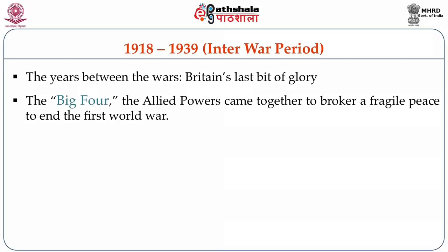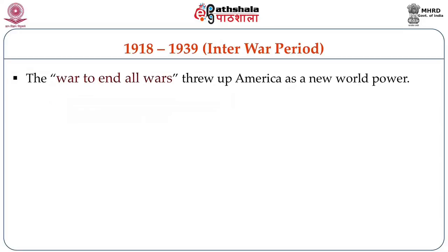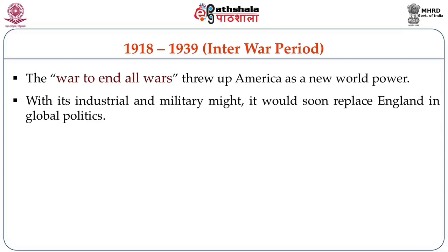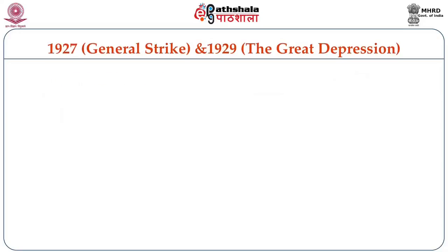The Big Four, the Allied powers, came together to broker a fragile peace to end the world war. The war to end all wars threw America as a new world power. With its industrial and military might, it would soon replace England in global politics. The General Strike of 1926 and the Great Depression during 1929 had their own impact on the history of England in general.